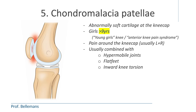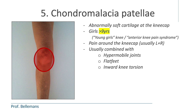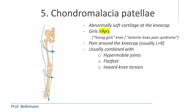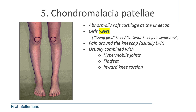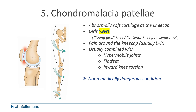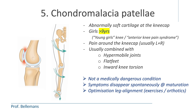Chondromalacia patellae is abnormally soft cartilage at the kneecap. It is frequently seen in girls and usually starts to cause pain around the age of 9, so it is commonly called young girl's knee or anterior knee pain syndrome. The pain is in the front of the knee around the kneecap, usually on both sides. These children often also have hypermobile joints, flat feet, and inward knee torsion, which is visible when observing the knees from the front during stance. Chondromalacia patellae is not medically dangerous and symptoms usually disappear spontaneously as maturation progresses. Optimizing leg alignment with corrective exercises and orthotics, together with a gradual individualized knee strengthening program, will often alleviate the symptoms.